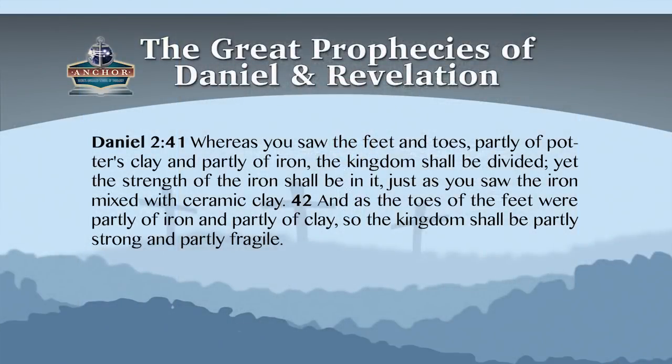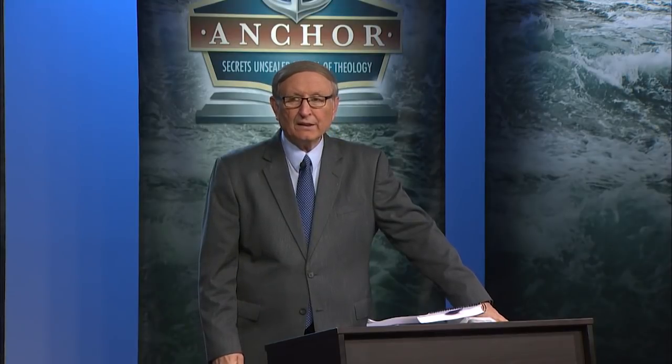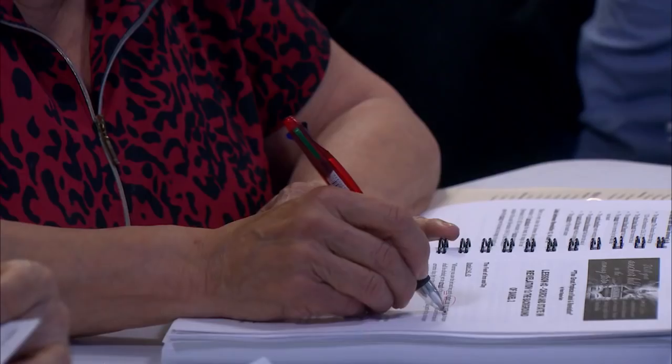Daniel 2:41-42: 'Whereas you saw the feet and toes, partly of potter's clay and partly of iron, the kingdom shall be divided; yet the strength of the iron shall be in it, just as you saw the iron mixed with ceramic clay. And as the toes of the feet were partly of iron and partly of clay, so the kingdom shall be partly strong and partly fragile.' So in the feet you have a mixture of iron and clay.